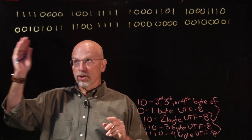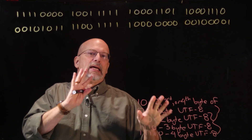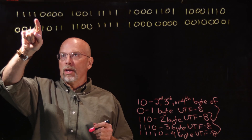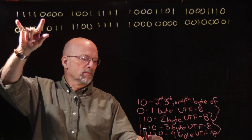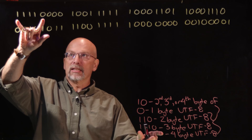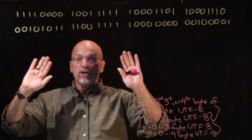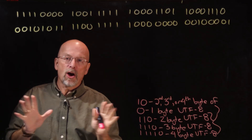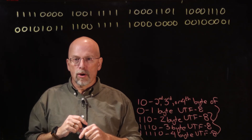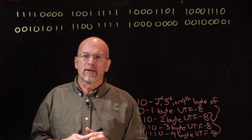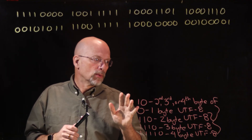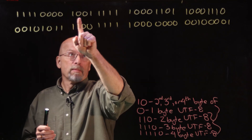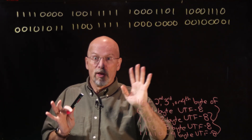Starting with the most significant byte, we check which pattern it matches. The first byte starts with one-one-one-one-zero — those five bits match the four-byte UTF-8 pattern. So this byte, plus the next three bytes, all belong to the same Unicode code point. The second, third, and fourth bytes must all start with one-zero, and indeed: one-zero, one-zero, one-zero — that looks correct.